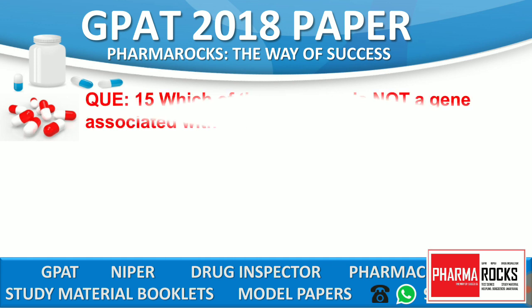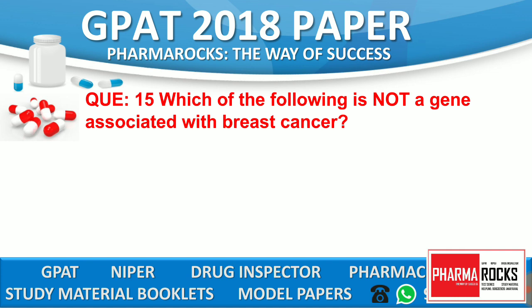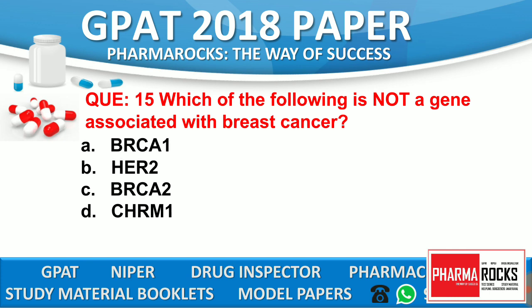Question number 15 from the GPAT 2018 paper: Which of the following is not a gene associated with breast cancer? Option A: BRCA1. Option B: HER2. Option C: BRCA2. Option D: CHRM1. The correct answer is D — CHRM1 is not a gene associated with breast cancer.